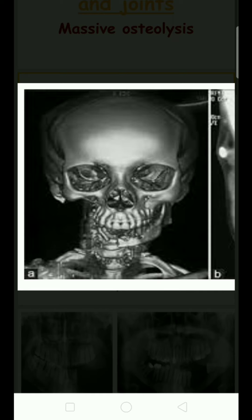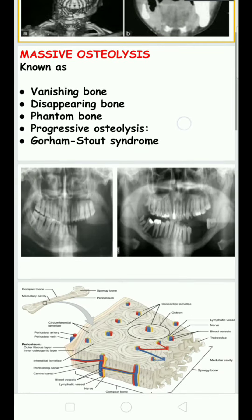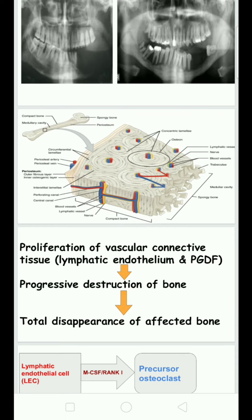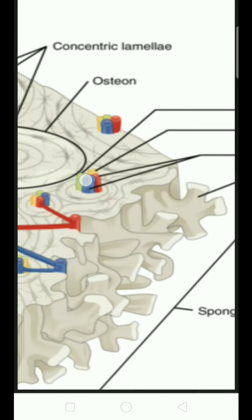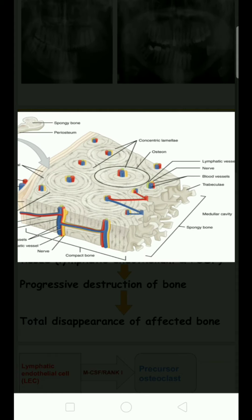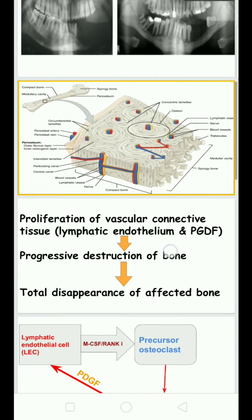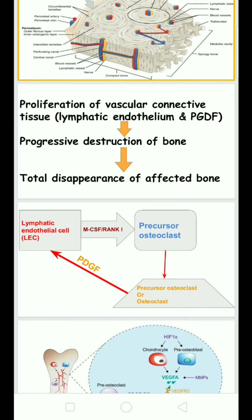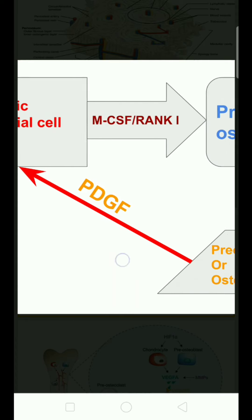This leads to total disappearance of the bone in that particular area. It is very progressive because it is due to vascular endothelial cells — especially lymphatic vessels — which stimulate the osteoclastic activity, leading to bone destruction and total disappearance of the bone.